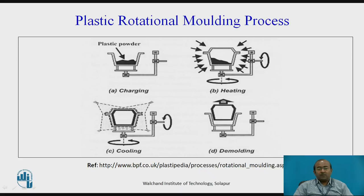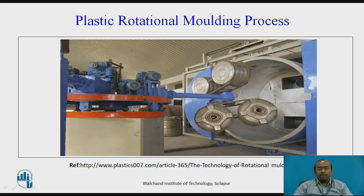The cooling process is then cut down. The part is taken out of the mold — the upper half of the mold is removed and demolding is carried out. Thus, in four stages — charging, heating, cooling, and demolding — large, uniform, symmetric jobs are produced through the means of the plastic rotational molding process.